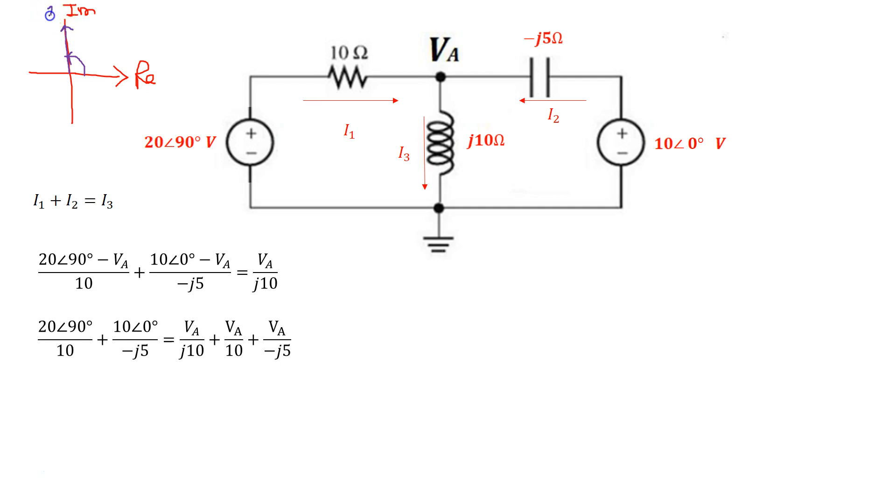So really, the imaginary axis is the j axis. So it's a magnitude 20 in the j axis. So 20 angle 90 degrees can also be written as 20j. So that's where this 20j comes in here. So 20j divided by 10.